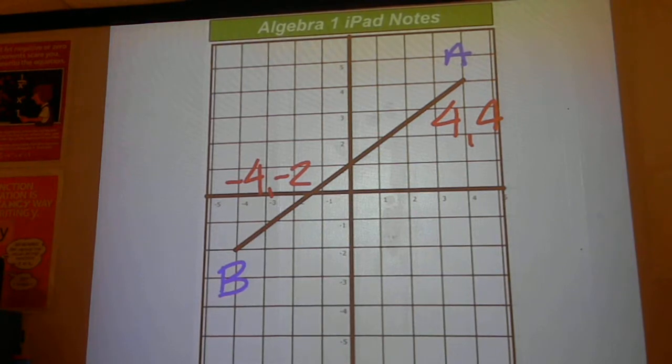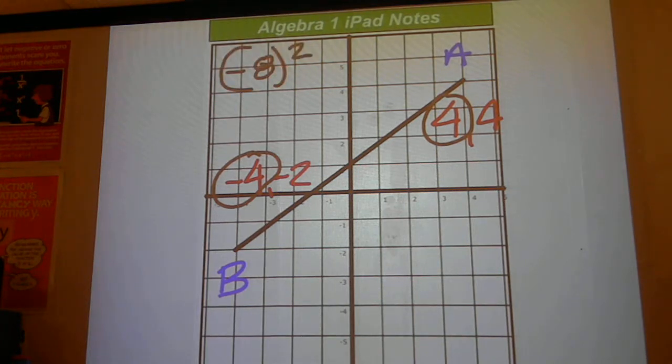And then step 1 is to do this. The x numbers, negative 4 and 4. Negative 4 minus 4 is negative 8, and then you're going to want to square negative 8 to get 64, and hold that.